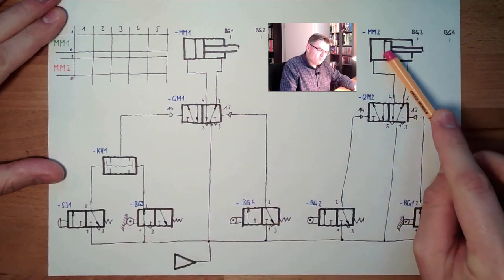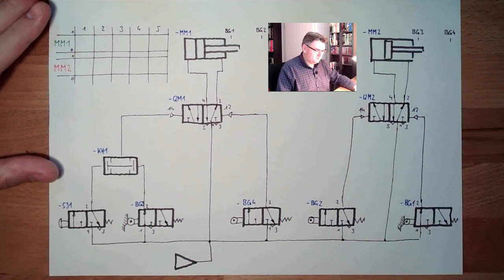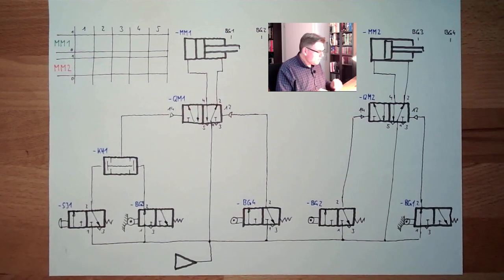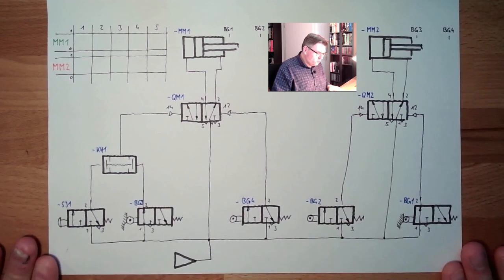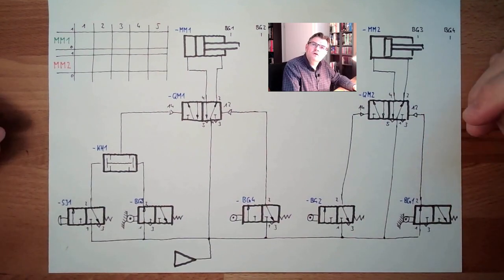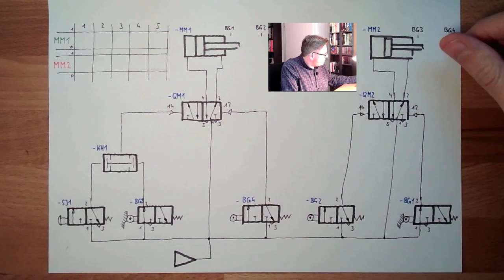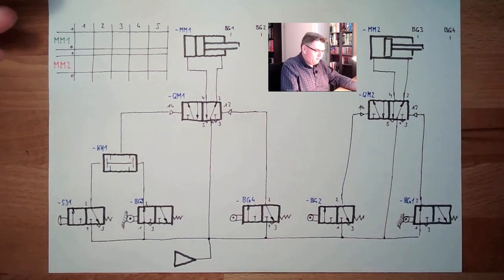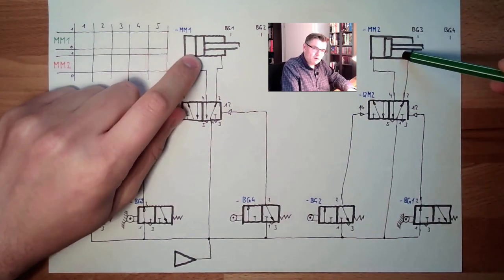This means MM2 is also inwards. What we want to do is analyze this pneumatic control and see what it's doing. We have two cylinders, double-acting cylinders.